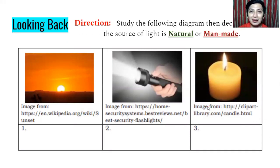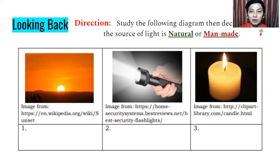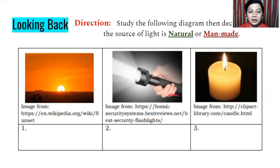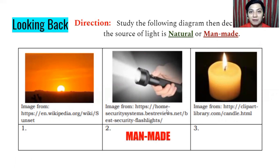Let's have a short recap — looking back to when you were in grade school. Study the following diagram, then decide whether the source of light is natural or man-made, also called artificial. For number one, we have the sun. For number two, we have a flashlight. For number three, we have candlelight. Number two — flashlight — is an example of a man-made or artificial source of light. Don't forget to answer this one.